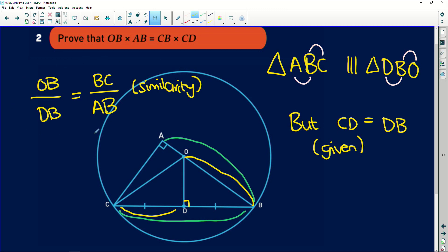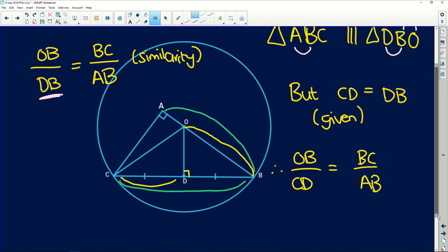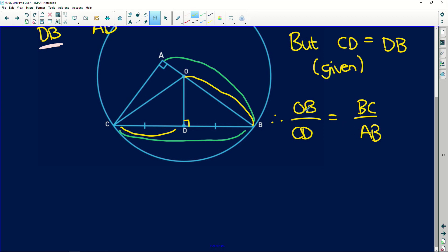So because we've got these ratios from our similarity, we can rewrite them. We can substitute CD in there. So we've got OB over CD is equal to BC over AB. Now, if we multiply these out, we cross multiply, we get OB multiplied by AB is equal to BC multiplied by CD.